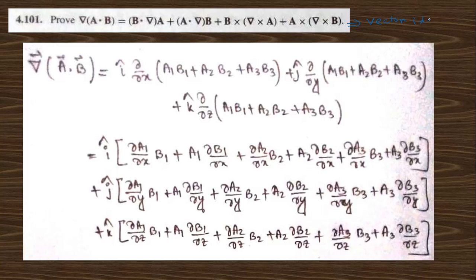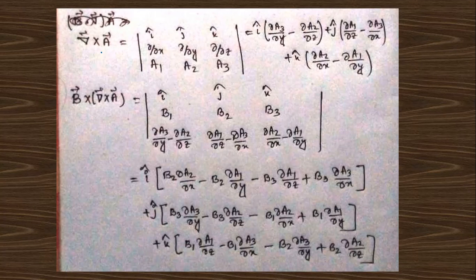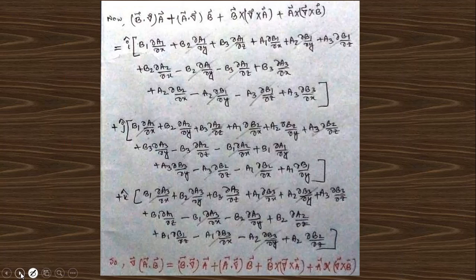Similarly, this is also a vector identity and it can also be derived after a long calculation process. In this scanned copy, for the divergence of A dot B, you get a total of 18 terms. Two of those terms were already calculated in the previous question, and two more need to be calculated here. Just call A and then cross with B vector — you get three terms in each, and finally when you add up all the terms you get the same as the left-hand side, proving these two identities.